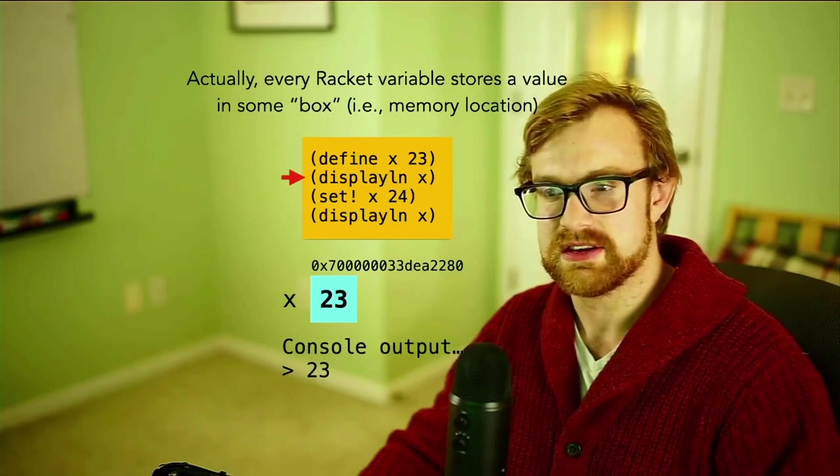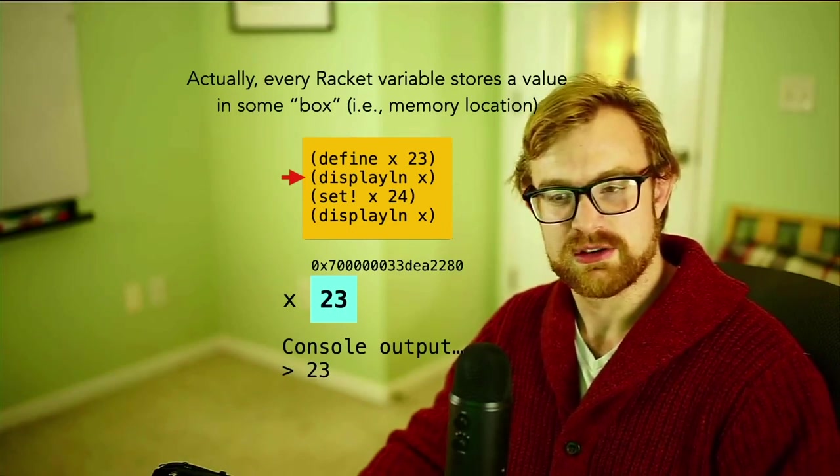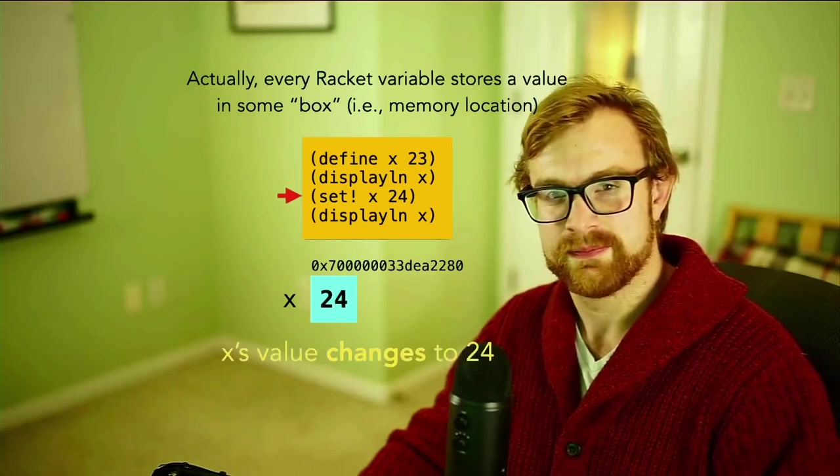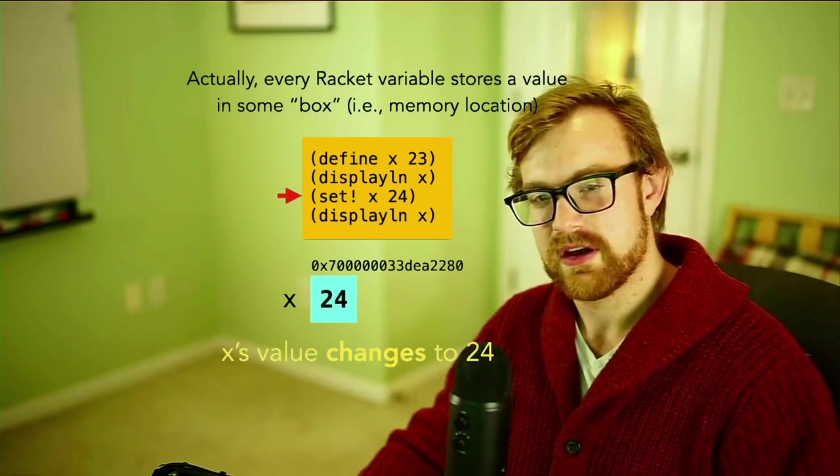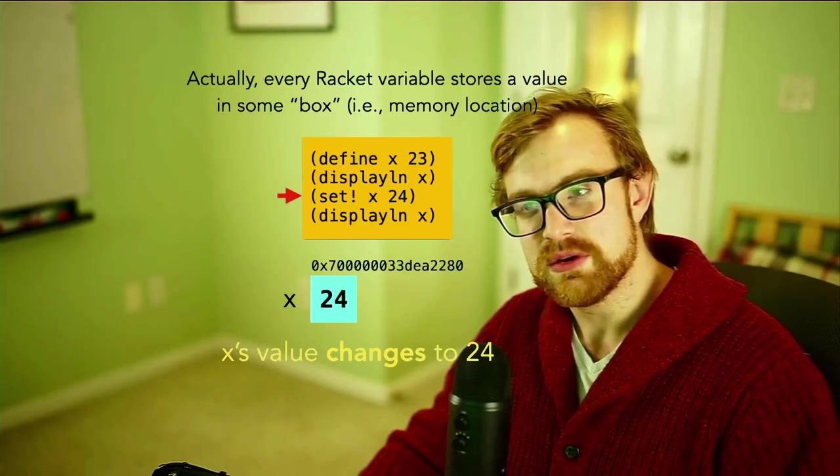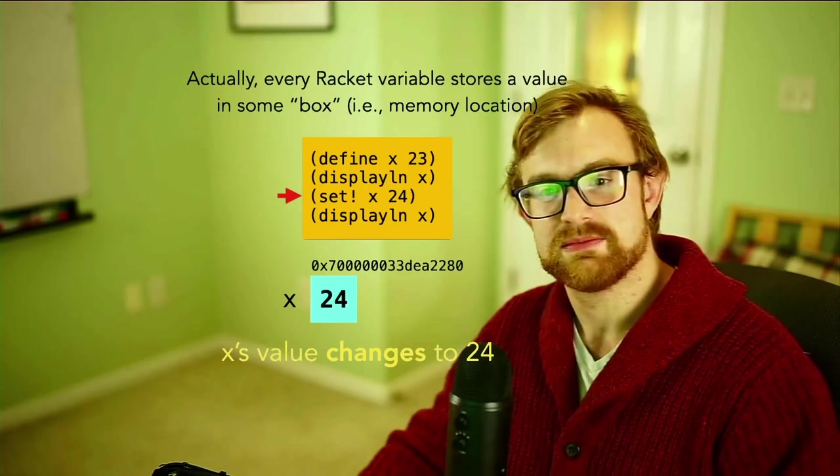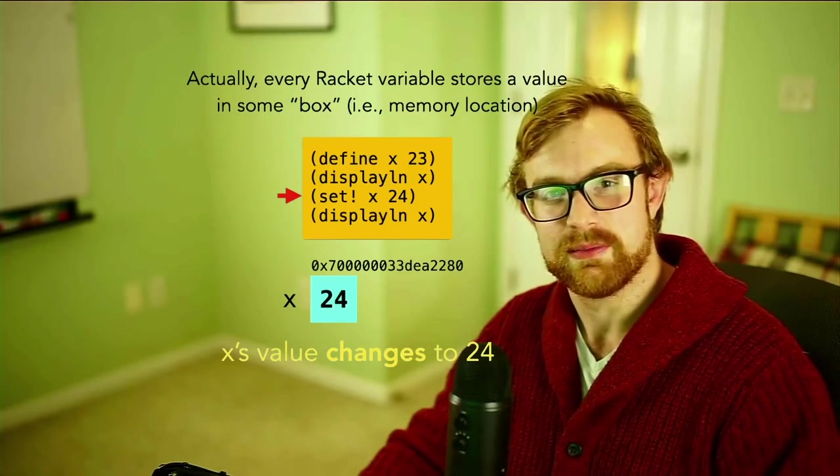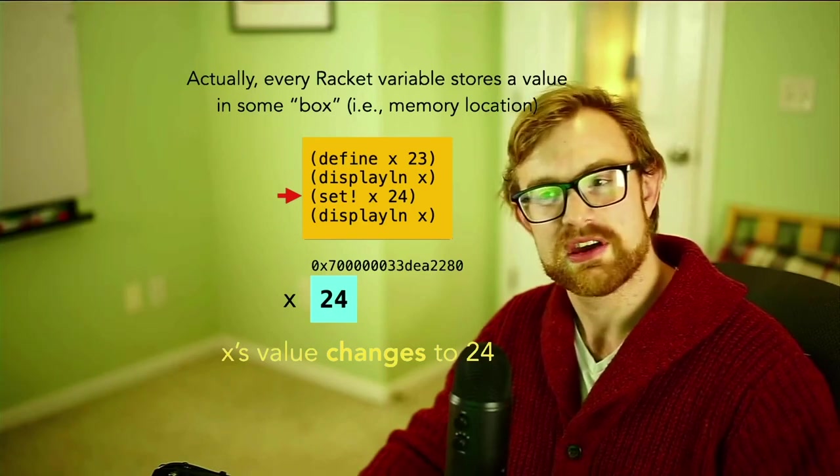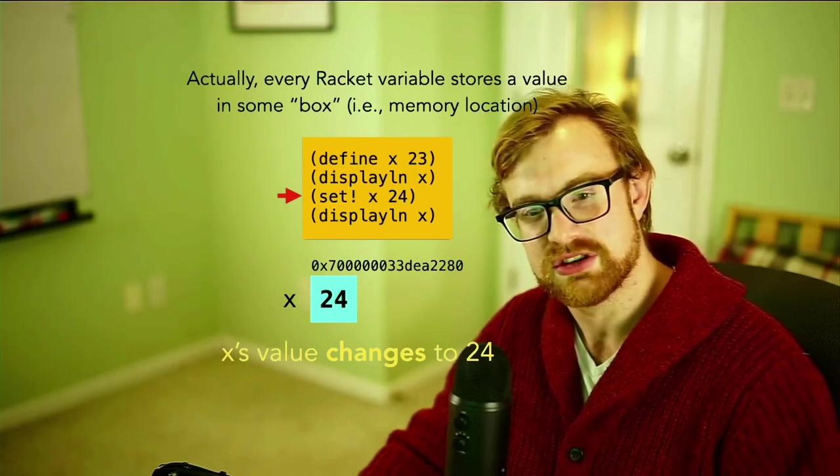But let's see what happens. The first time I get to the displayln, I'm going to be printing out 23. But I'm going to encounter set-bang. Now set-bang takes a variable and a thing to update that variable to. And set-bang mutably writes the box in memory corresponding to that variable and updates it so that now here X becomes 24. X's value changes.